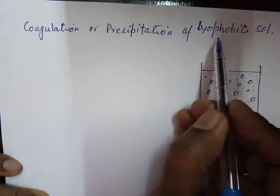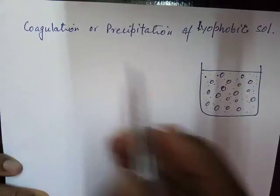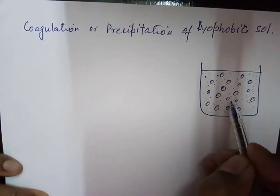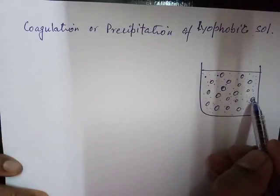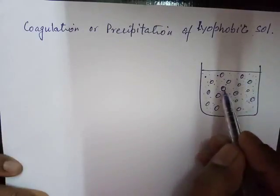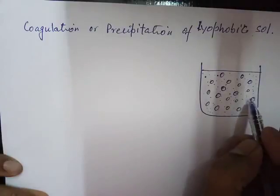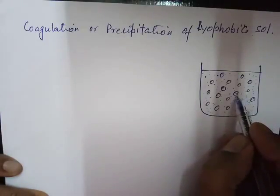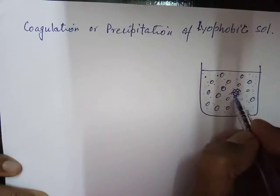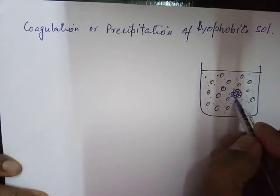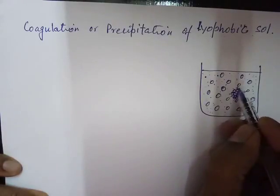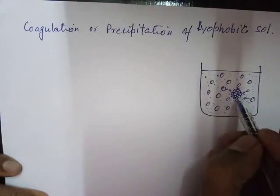We are going to study how coagulation or precipitation is carried out. The stability of colloidal particles is due to the presence of charge on their surface. If by any means we are able to remove the charge present on these colloidal particles, they will lose their charge, and under the influence of weak van der Waals forces they will start coming closer and form larger aggregates.